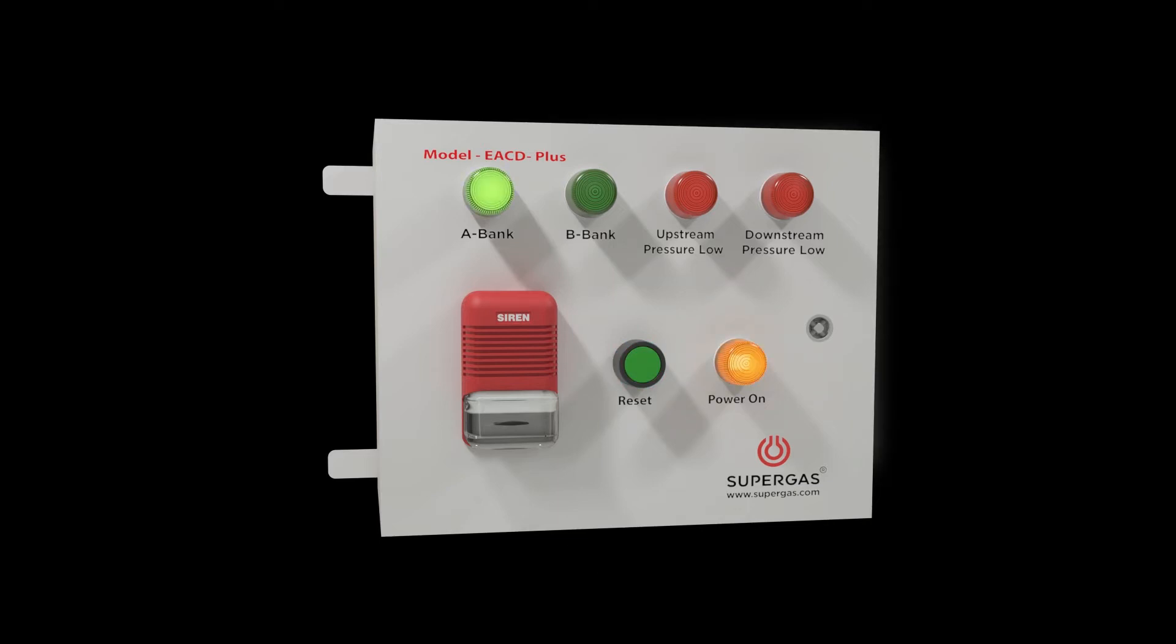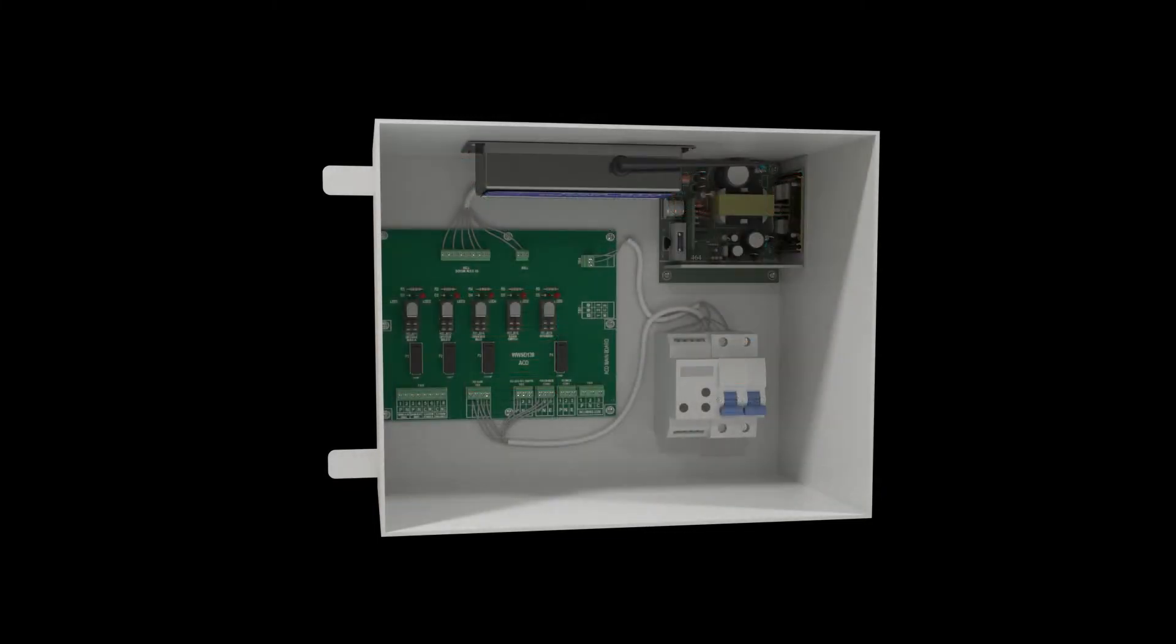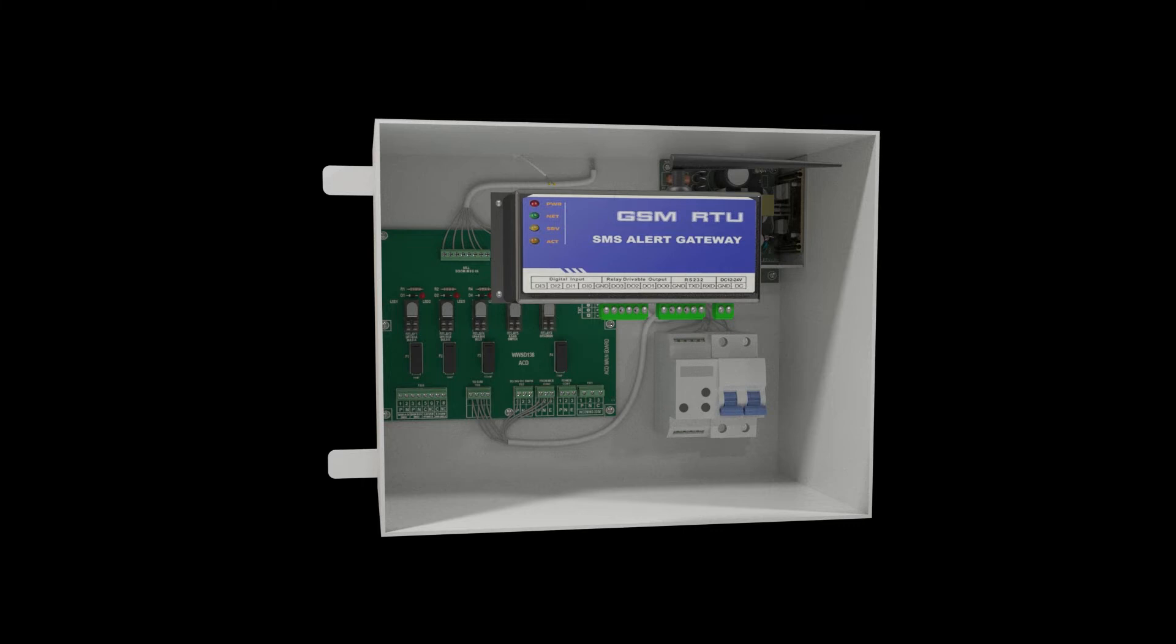The hooter is equipped to alert the personnel on a bank changeover, low downstream or low upstream pressure. The EACD Plus system has a GSM module where a network SIM card, preferably postpaid, is inserted for the auto-email and SMS triggering to the designated personnel informing the bank status and the changeover.